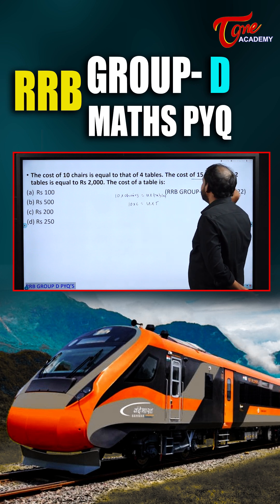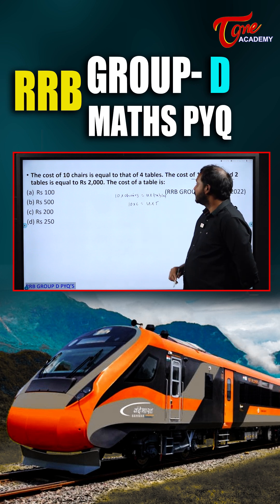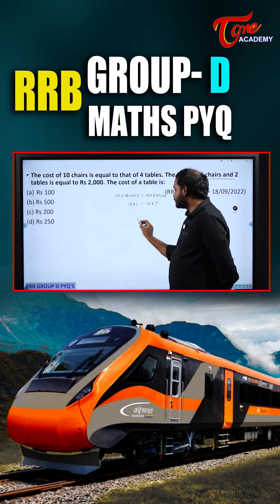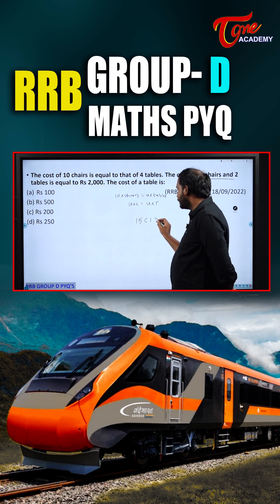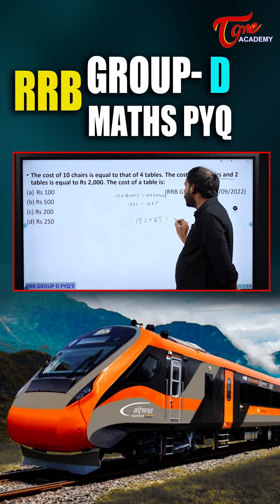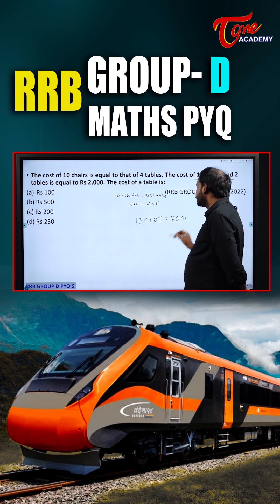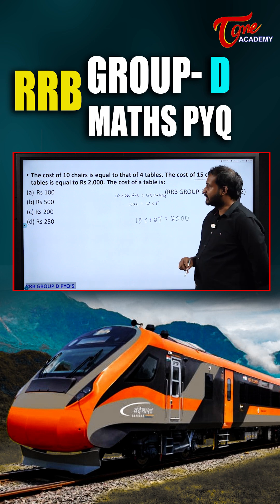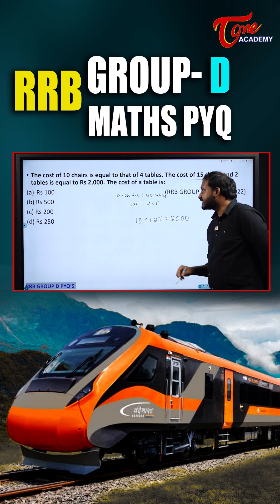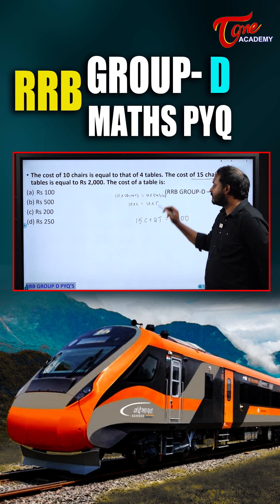The cost of 15 chairs and 2 tables — that means 15C plus 2T is equal to 2000. And they are asking us: what is the cost of the table?